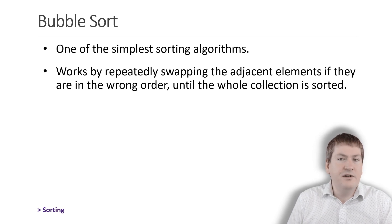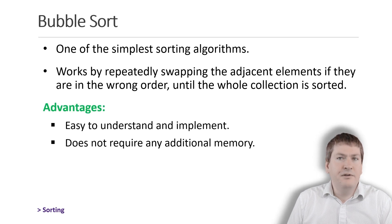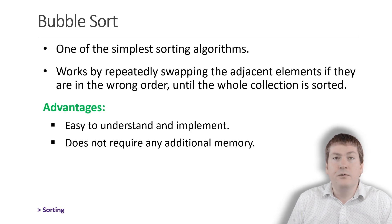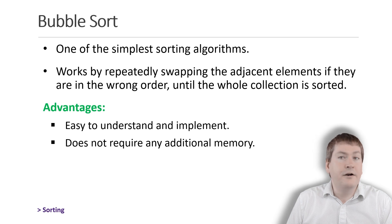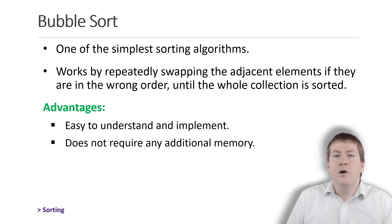This process has a few advantages and disadvantages. For advantages, bubble sort is easy to understand and implement, which is why it's a popular first sorting algorithm for students. And two, it does not require additional memory. As the swaps are done in place, we don't need to make a copy of the list or use much additional memory space.